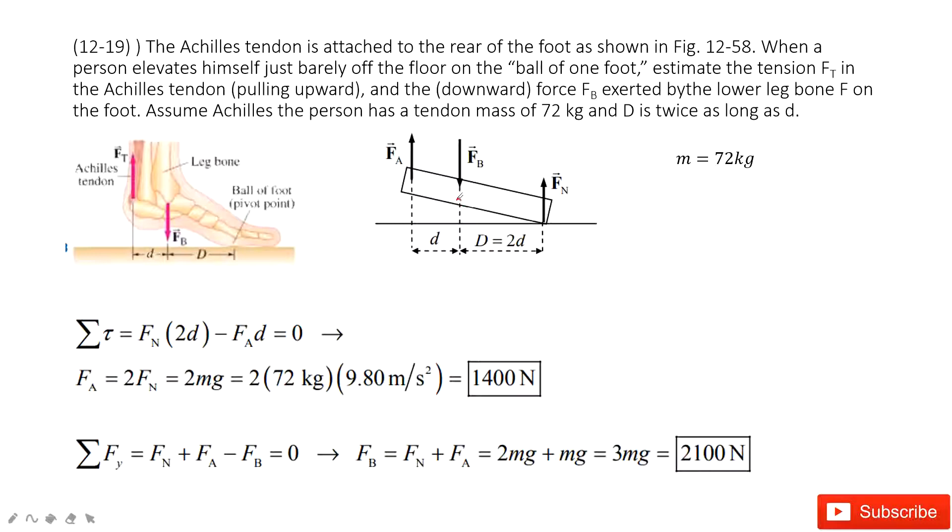So we select this point as the rotation axis. Now the torque at the left hand side is FA times d. On the right hand, FN times capital D, so FN times 2d, right?